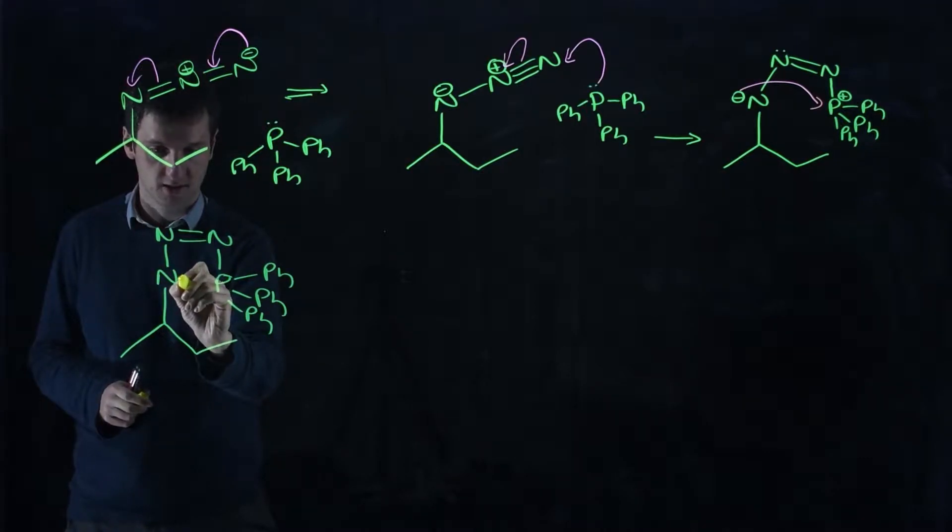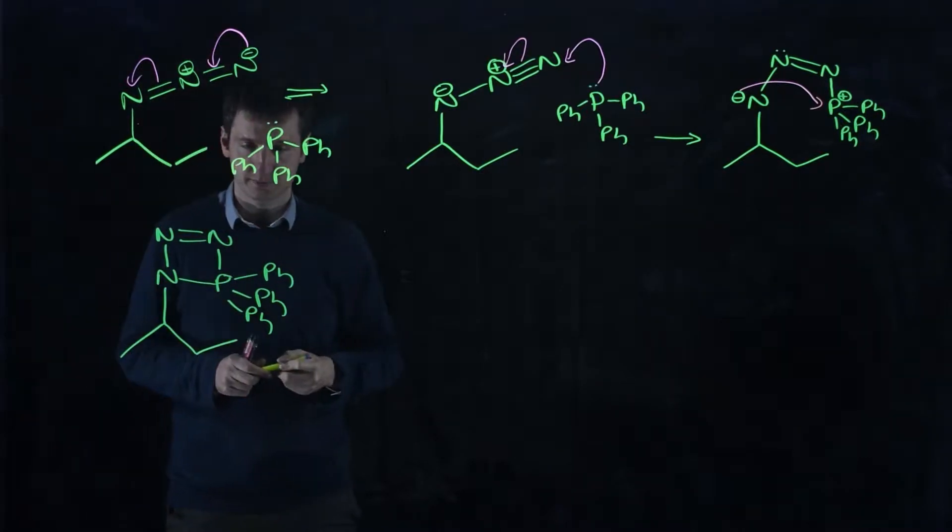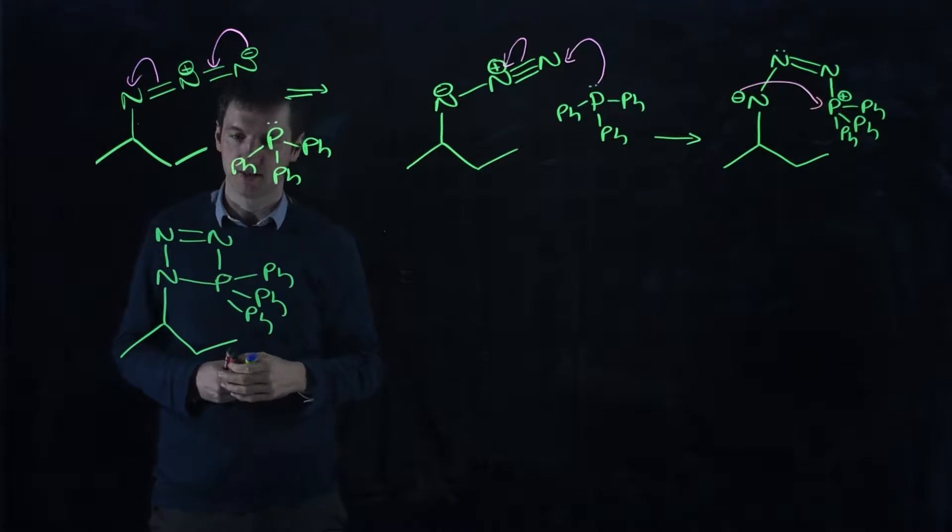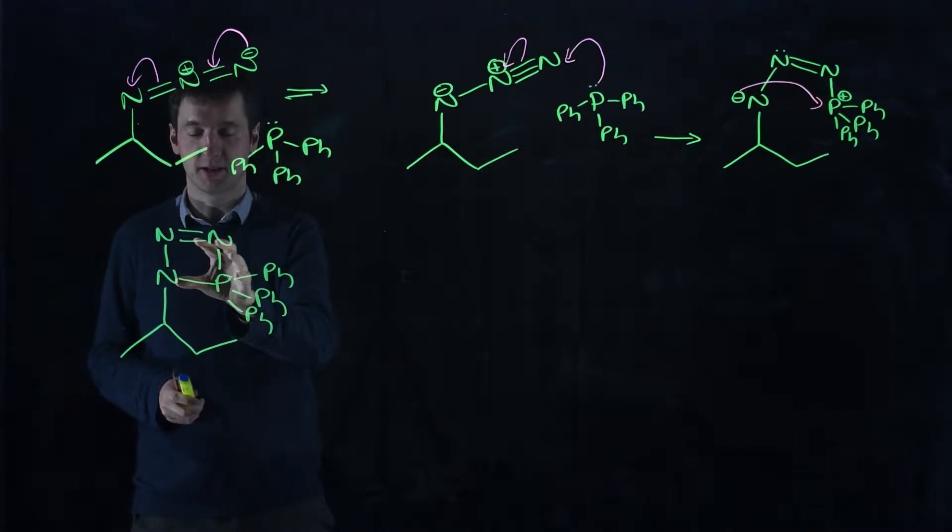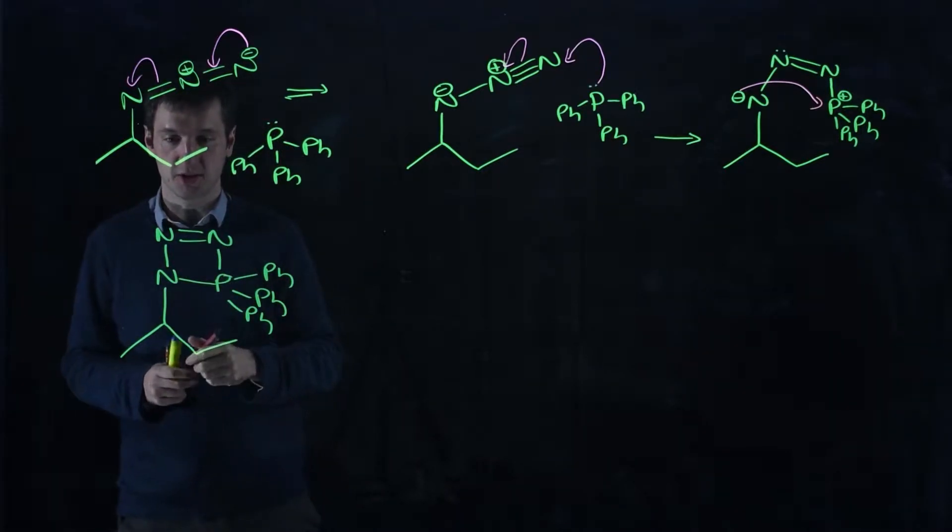This had a negative charge. So we made a new bond there. And this is a temporary intermediate. It's not going to last a long time because it's very easy to push the electrons around.